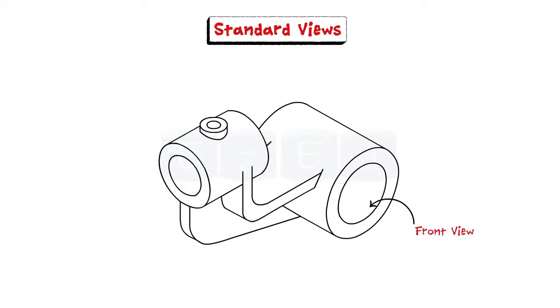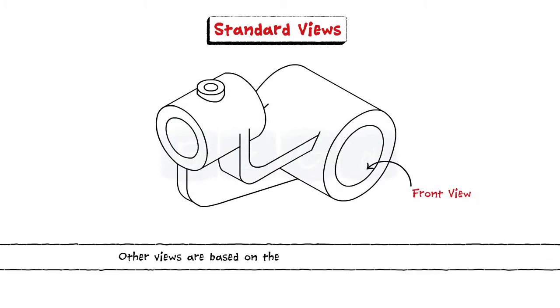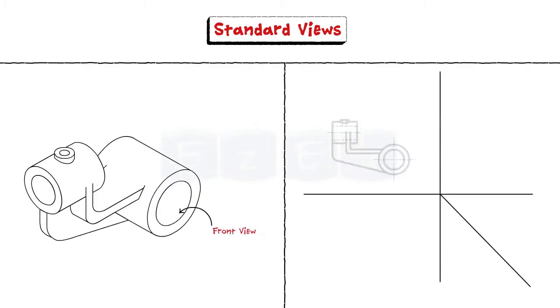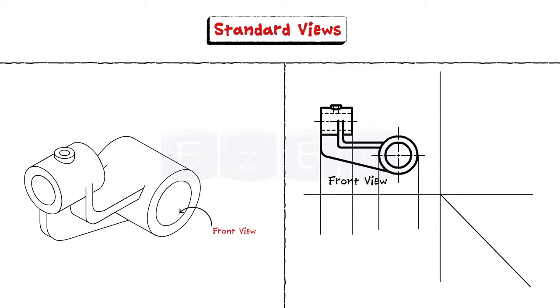While drawing orthographic views, generally the front view is chosen first and the other views are based on the orientation of the front view. Since the front view shows the most features or characteristics of the object and contains the least amount of hidden lines.